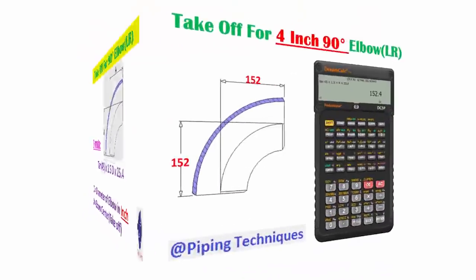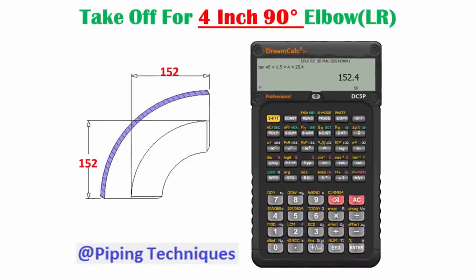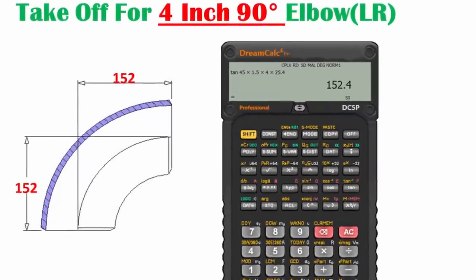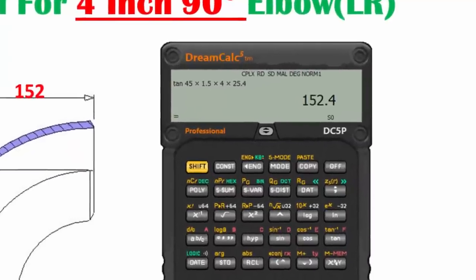For example, 4 inch 90 degree elbow takeoff calculation using scientific calculator. Enter the diameter of elbow value in inches as the given formula shown in picture.